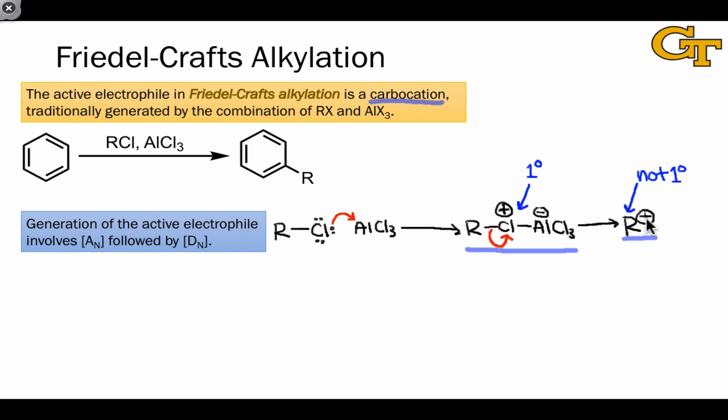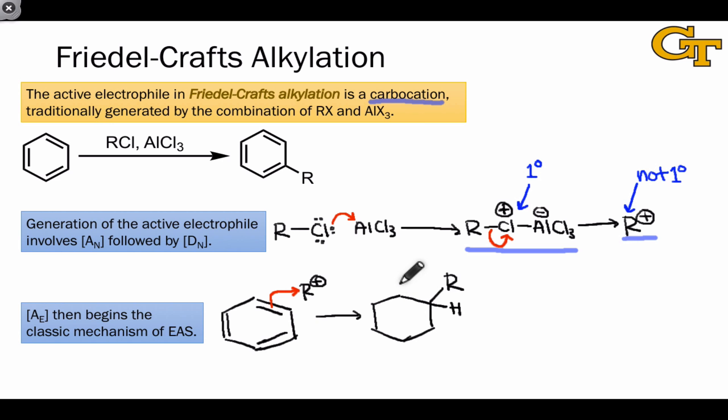To show the rest of this mechanism, I'm going to focus on R+ as the electrophile. By now we should be very familiar with the general pattern of reactivity in EAS reactions. A pair of pi electrons in the aromatic first coordinates to the electrophile in an A-sub-E step, generating a non-aromatic sigma complex containing positive charge.